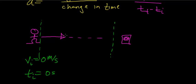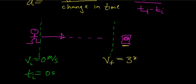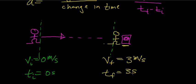The runner's velocity continuously increases. By the time they reach the finish line, their final velocity as read by the radar gun is 3 meters per second. We also assume that once this person reaches the finish line, their final time is 3 seconds.